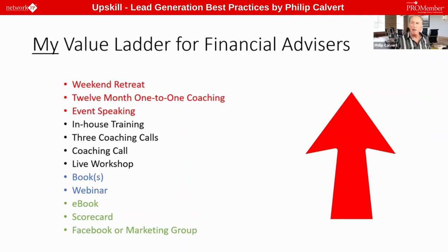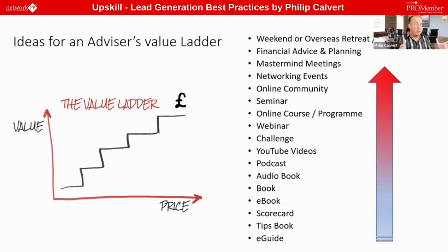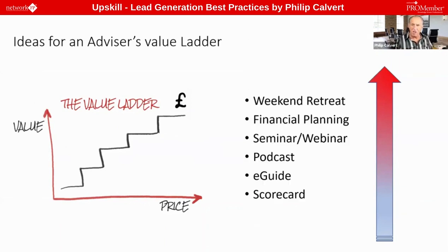I need to offer these free and cheaper products first so people can get to know me. For a financial advisor, your value ladder could include free downloads, a tips book, a scorecard, an audiobook, a podcast, videos, or an online challenge. Some are free, some you charge for, and at the top you could offer an overseas or weekend retreat for your highest-value clients.